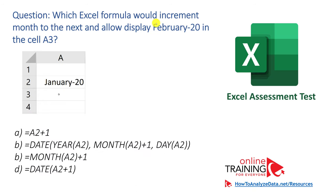Which Excel formula would increment the month to the next and allow display of February-20 in cell A3, given January-20 in cell A2? Four formulas are presented as choices: A2 plus 1, a more complex formula using the DATE function, MONTH(A2) plus 1, and DATE(A2) plus 1. Which one do you think is the right answer?